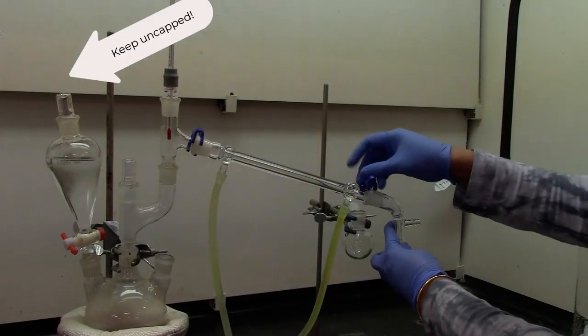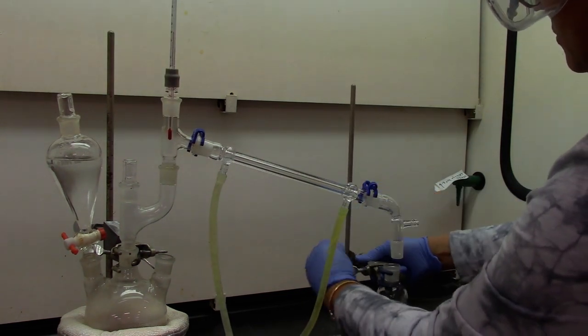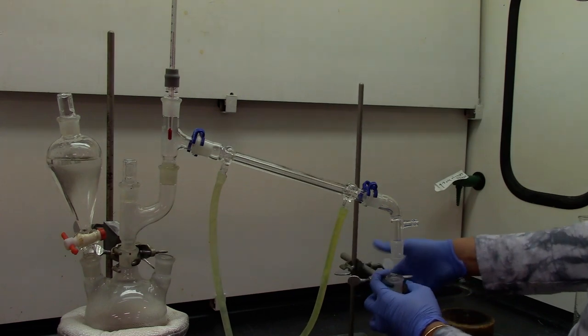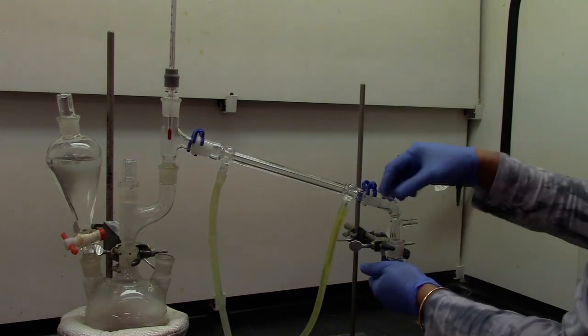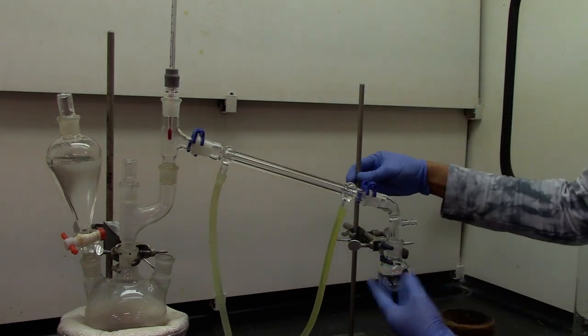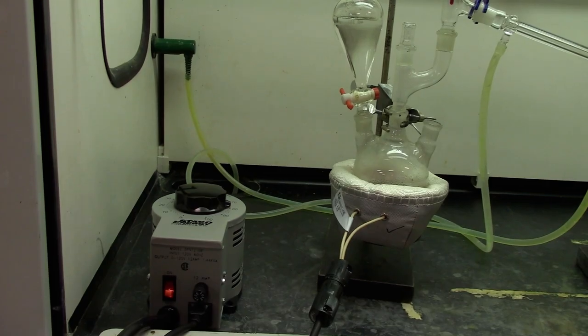Add the west condenser with keg clamps and a vacuum adapter at the end of the west condenser and the collection flask at the end of the vacuum adapter. Go ahead and turn on the heat and wait for the distillation to start.